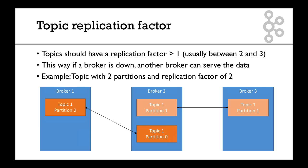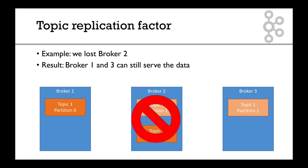Let's consider what happens if we lose broker two — it goes down and crashes. That's fine because we had a replication factor of two. Broker one and three can still serve the data — we still have partition zero and partition one available. The idea is that with a replication factor of two, you can lose one broker and still serve the whole dataset. It's really important to set a replication factor of at least two, and usually three is the optimal number.